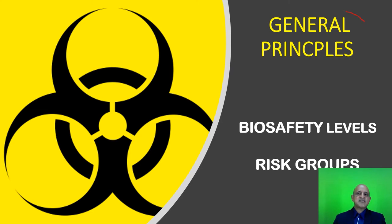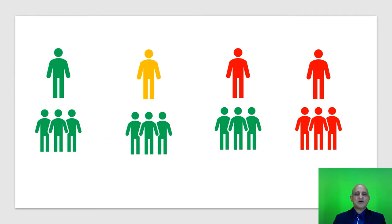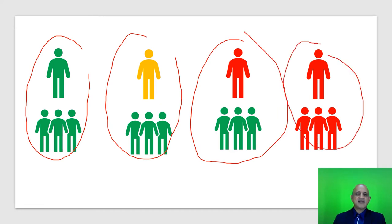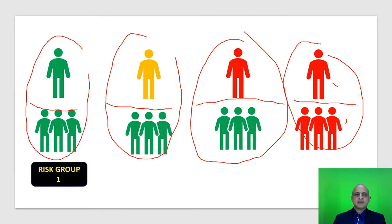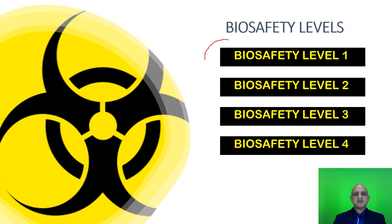The manual commences with what are termed general principles, which include biosafety levels and risk groups. Risk groups have been discussed in the earlier lecture on biological agents. We have risk groups 1, 2, 3, and 4, categorized based on their impact on the individual as well as on the community. The WHO also specifies four biosafety levels, which we will delve into in detail during the course of this lecture.